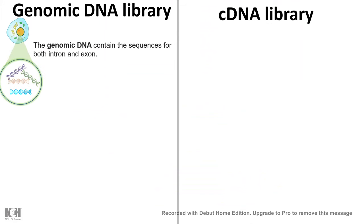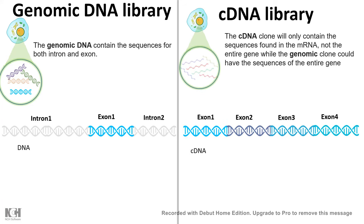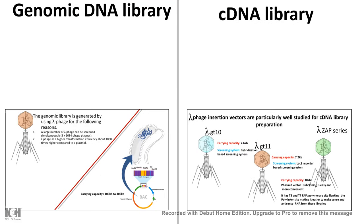The genomic DNA library contains sequence information about both introns and exons, because the genome comprises both. But when it comes to the transcriptome, only the exons are transcribed, and in eukaryotes the exons are alternatively spliced. The mRNA contains only exons, so the cDNA has sequence information about exons only — no introns. In short, cDNA libraries contain less sequence information than the genomic DNA library.